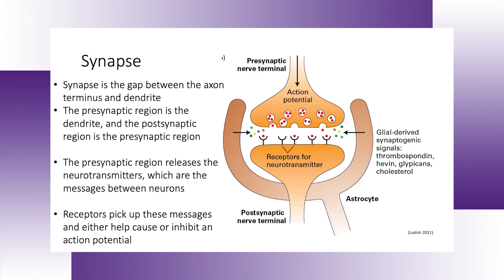The synapse is the place where information transforms from one neuron to another. The action potential is intracellular communication; the synapse is the extracellular communication — the gap between the axon terminus and the dendrite. This is where neurotransmitters are released from the axon terminus and received by the dendrites. If the signal is strong enough — and dendrites can connect up to 10,000 different cells in the brain — it will cause an action potential.